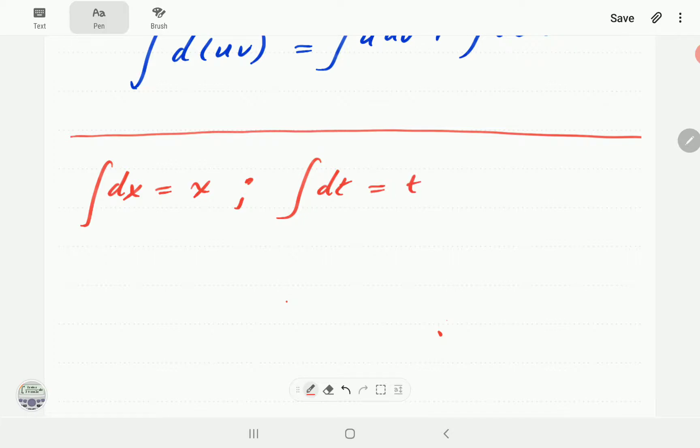Integral of dm is going to be m. So what's developing here is that it appears whatever we have after the d becomes the answer of your integration process.